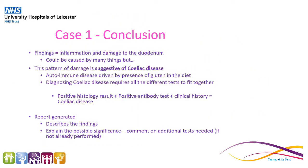The conclusion for case one is that we have got inflammation and damage of the duodenum. This could be caused by many things, but this particular pattern of damage is suggestive of a disease called coeliac disease. This is an autoimmune disease which is driven by the presence of gluten in the diet. However, diagnosing coeliac disease requires all the different tests to fit together, and so this patient would require histology, plus a positive antibody test, plus the correct clinical history. For our part, we would generate a report describing the findings and explaining the significance, and comment on the additional tests needed if they hadn't already been performed.